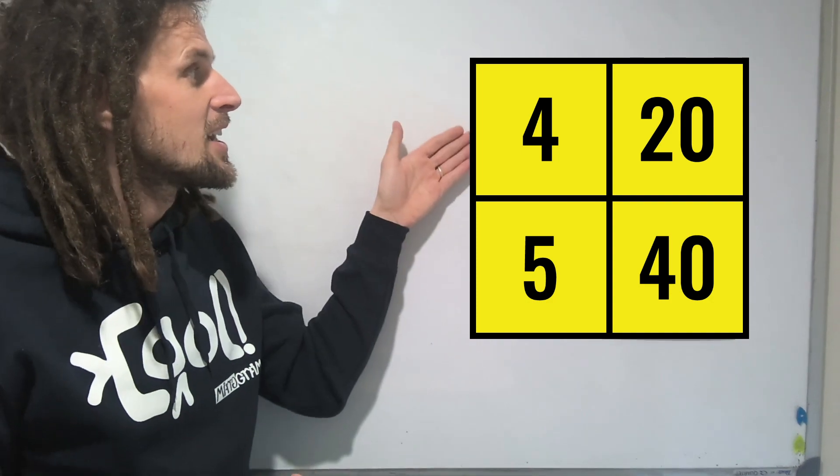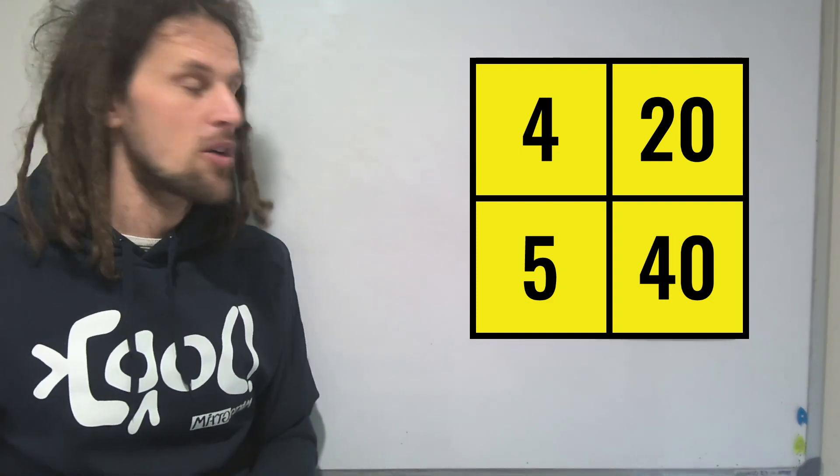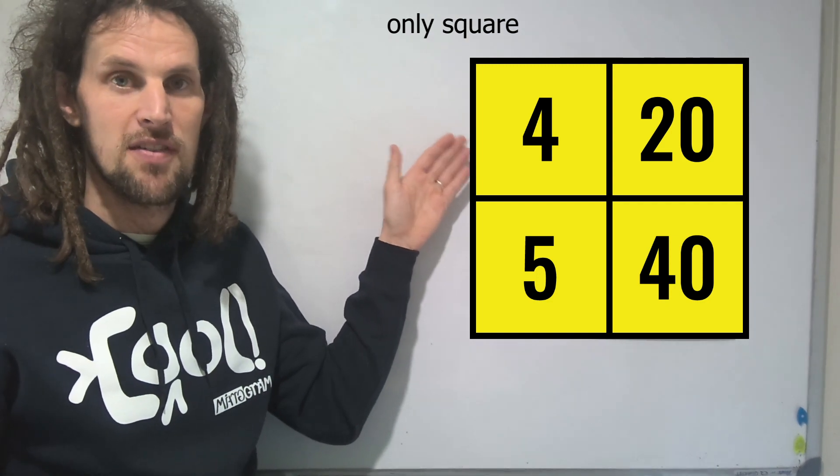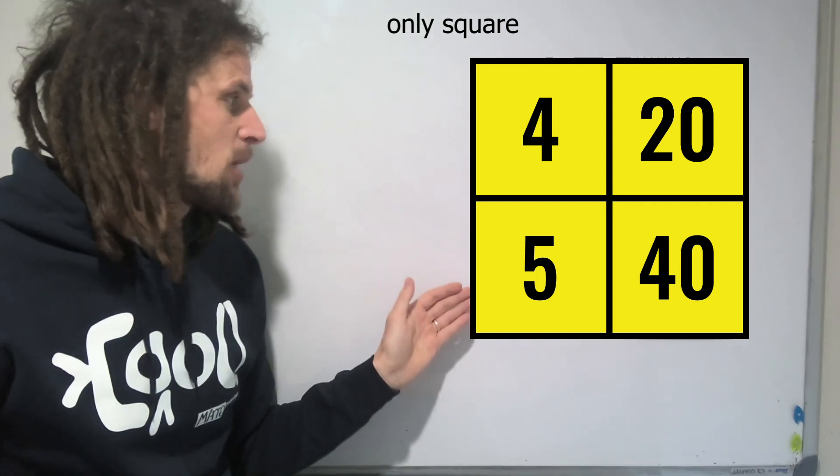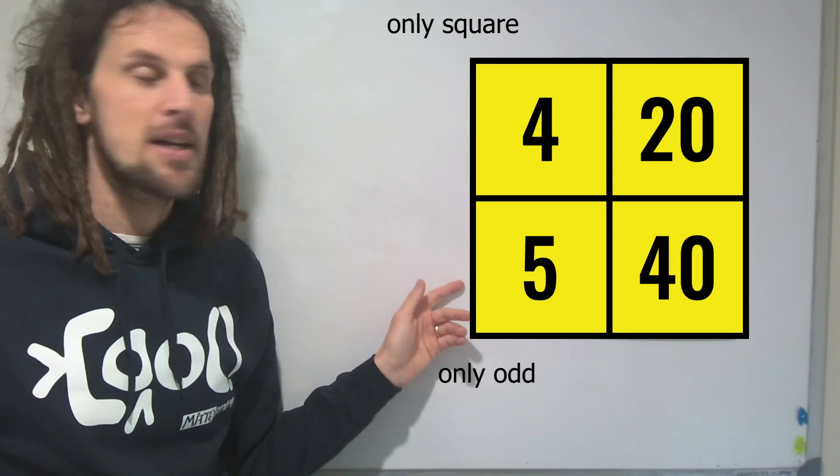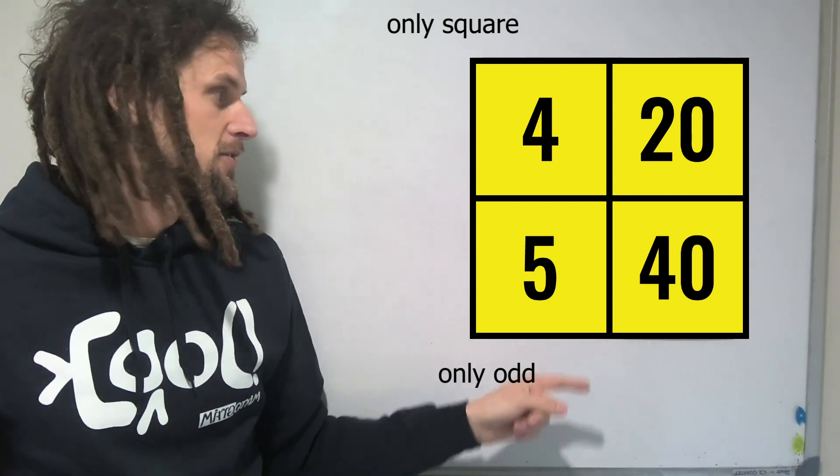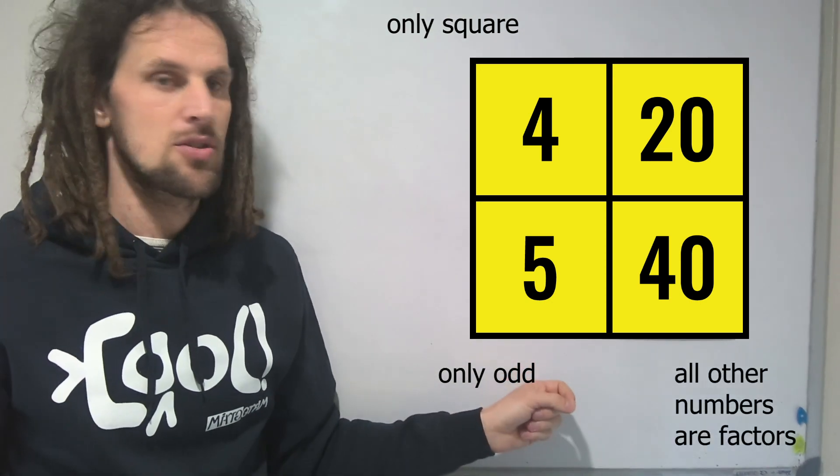Here, the four could be the imposter because it's the only square number. So there's one piece of evidence against that. The five might be because it's the only odd number. The 40 might be because all of the other numbers are factors of 40, and that's the only one it's true for.